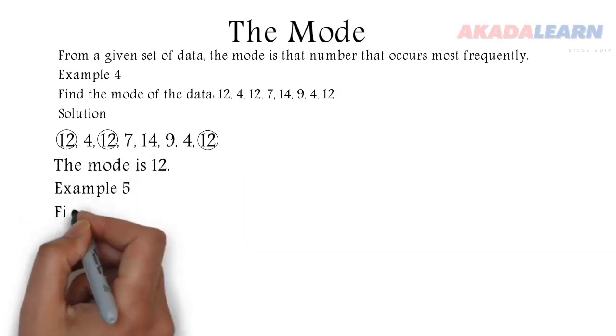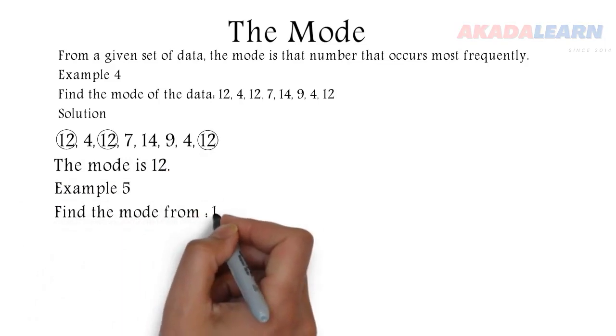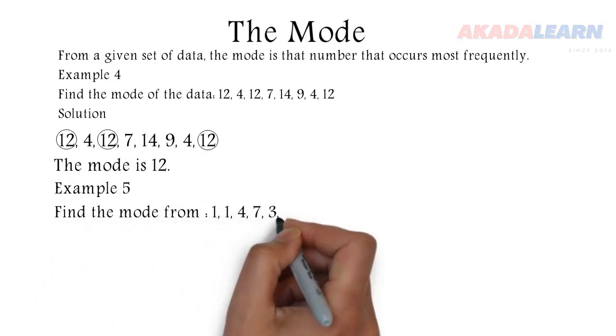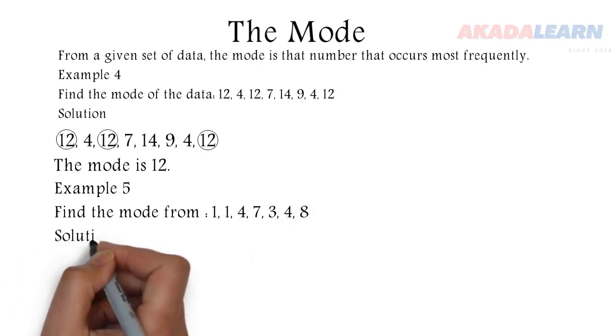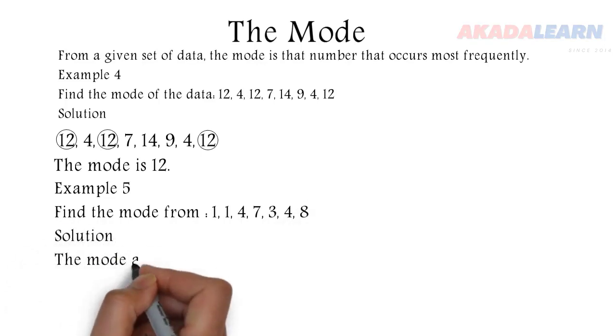Let's see another example: find the mode of 1, 1, 4, 7, 3, 4, 8. We see 1 appears two times, 4 appears two times, so the mode is 1 and 4, meaning we can have more than one number as the mode.